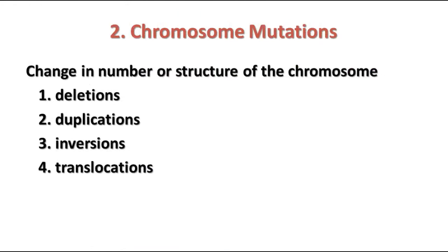Now there are also chromosome mutations — changes in the number or structure of the chromosomes — and these are going to be much more harmful to the organism overall. There will always be some kind of birth defect or problem, especially if they occur in sex cells or gametes, which is where they usually occur. You can have things like deletions, duplications, inversions, or translocations.